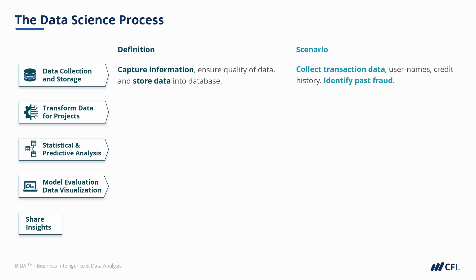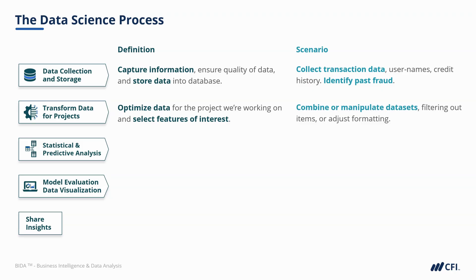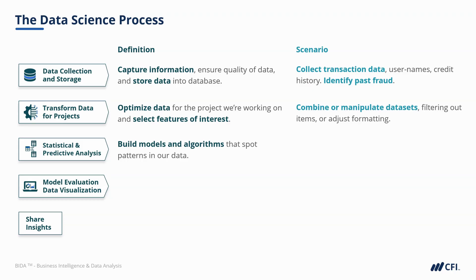Next is transforming data for projects — optimizing our data for the specific project we're working on and selecting features or data points of interest. We might combine or manipulate transactions from multiple datasets, filter out less important items, or adjust the data structure to make it more usable for analysis. At this point, we're ready to identify fraud with a statistical model. So naturally, the next step is statistical and predictive analysis — where the magic happens. This is where we build models or implement algorithms that spot patterns in our data. In our scenario, we train the model to identify the leading indicators of fraudulent transactions.